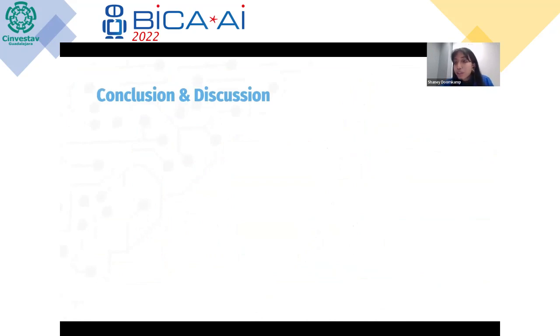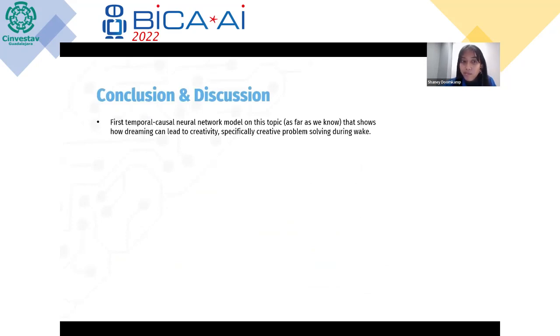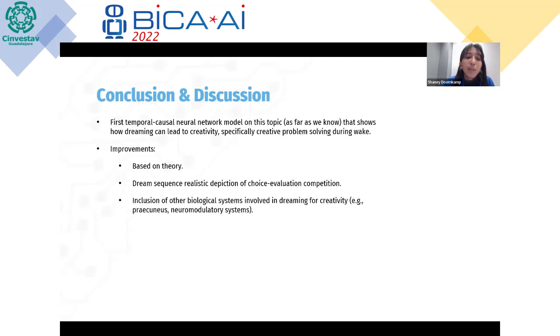Next, conclusion and discussion. We think this is one of the first models that actually tried to demystify this phenomenon, specifically creative problem solving. We did show with our model how it could be possible that this phenomenon occurs. Of course, there could be improvements to this model and there are some limitations. First of all, this study was based on theory. It would be nice if there was more experimental data. As well, the dream sequence is just not very realistic. It's made for simplicity, because normally it would probably be a big expansion of choices that you can make in your dream or how we can model that.